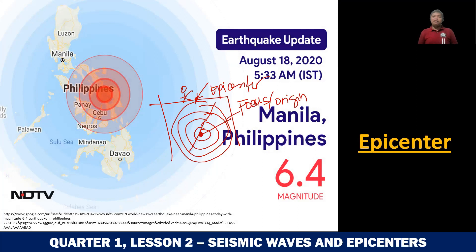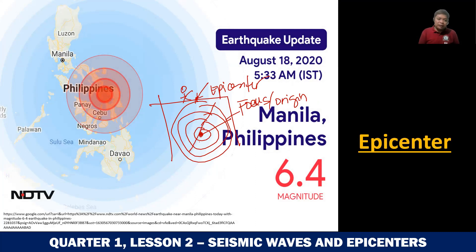That's the epicenter of the earthquake. Here in this news, there was an earthquake update on August 18, 2020 at around 5:30 AM in Manila, Philippines — a 6.4 magnitude earthquake occurred. Here is the epicenter — it was in the Visayas area.